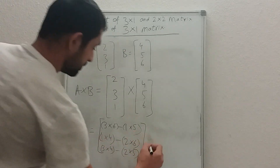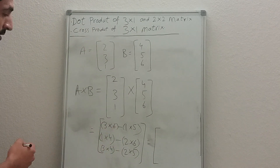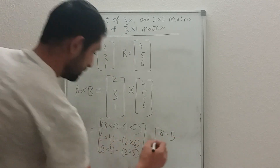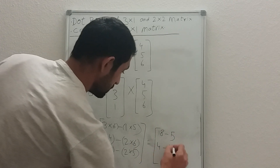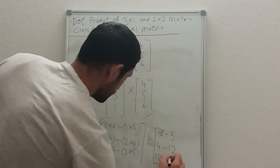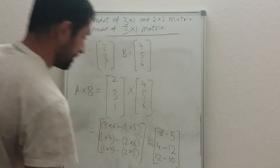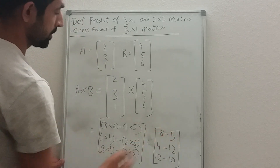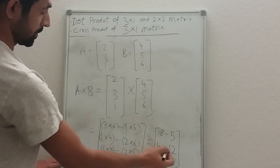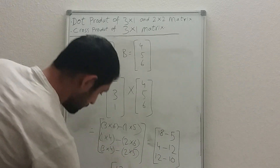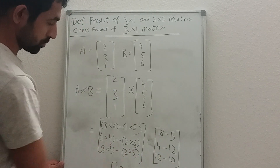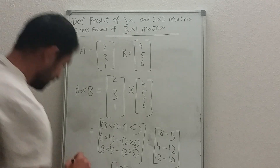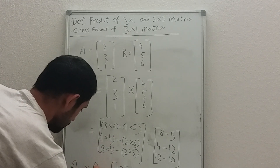Now we simplify: three times six is eighteen minus five is thirteen for the first component; one times four minus two times six is four minus twelve which is negative eight for the second; two times five minus three times four is ten minus twelve which is negative two. So the answer for A cross B is thirteen, negative eight, negative two.